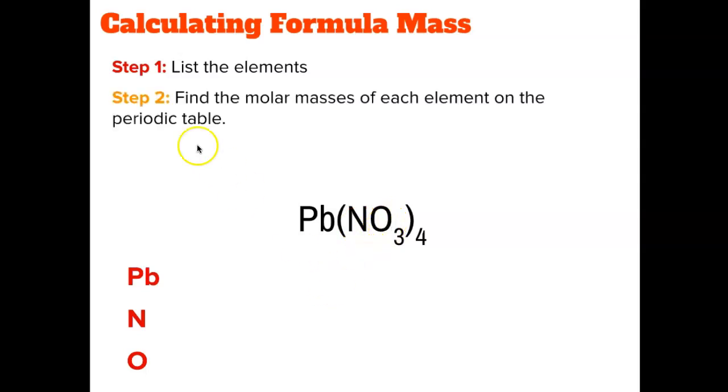Step two is we're going to find the molar masses of each of these elements on the periodic table. I'm going to look at my periodic table squares and I'm going to see that lead has a mass of 207.2, nitrogen is 14.01, and oxygen is 16.